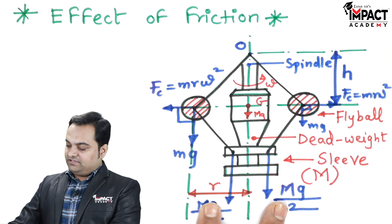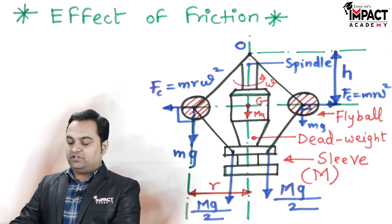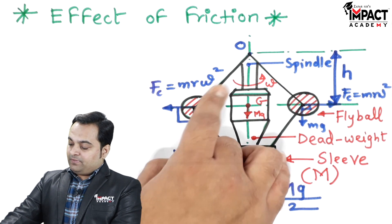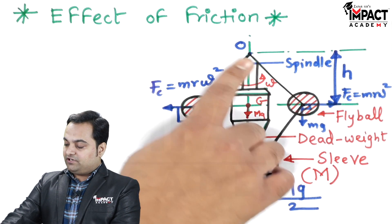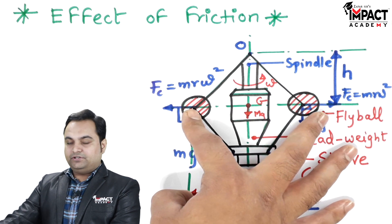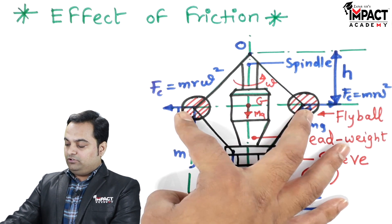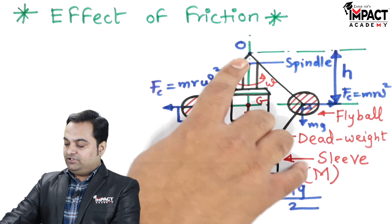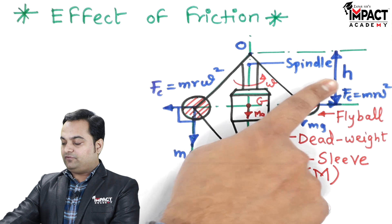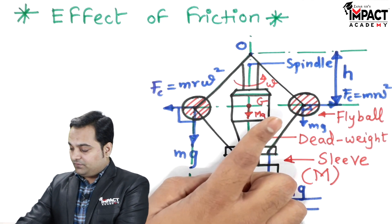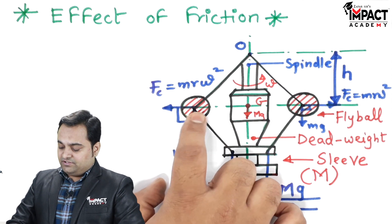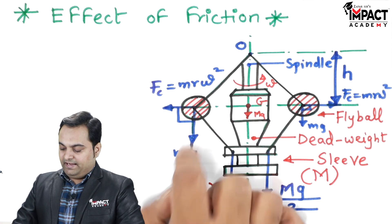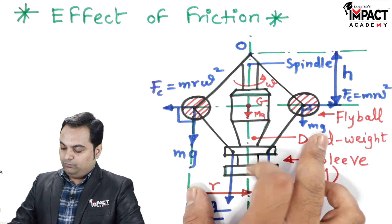We have a spindle which is continuously rotating, sensing the engine speed. We have upper links connected from point O up to the center of the fly balls. These fly balls have mass small m. The distance from point O to the center of the fly ball is called the height of the governor. The weight of the fly balls is m into g on both sides.